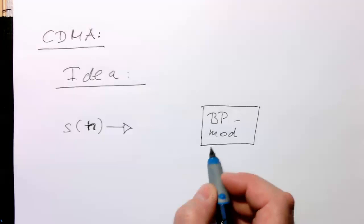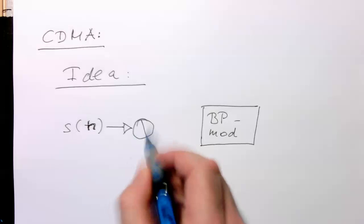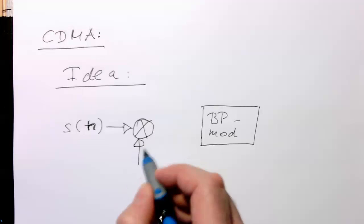And so this is usually what would go straight through here. So what we do now is, we multiply that with a pseudo random number sequence here.